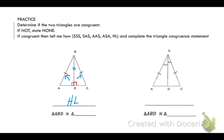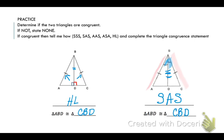So triangle ABD is congruent to triangle CBD. In my second set, I have one side of one triangle congruent to one side of another, and one angle congruent to another. I can also prove that BD is congruent to itself by the reflexive property. So I could prove that these two triangles are congruent using the side angle side theorem — triangle ABD is congruent to triangle CBD.